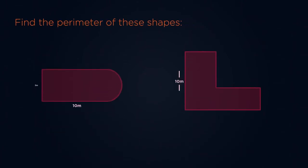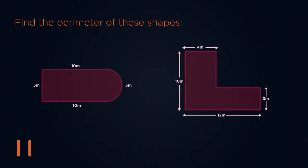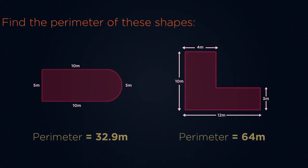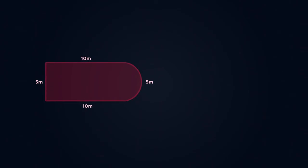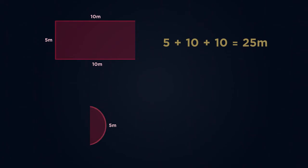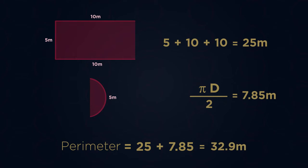Can you find the perimeter of these compound shapes? Pause the video and give them a go. Did you get 32.9 metres and 64 metres? Let's quickly have a look at where these numbers came from. Split the shape up into a rectangle and a semi-circle. For the rectangle, we only want three sides, and then we only want the circumference of half the circle — hence divide by 2. Add the perimeters together and we get 32.9 metres.